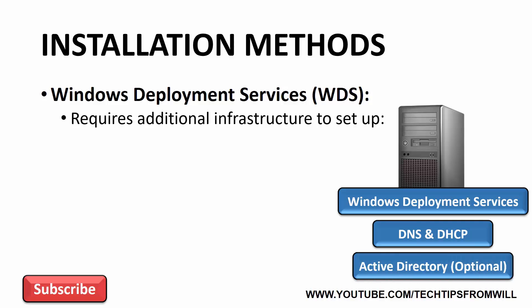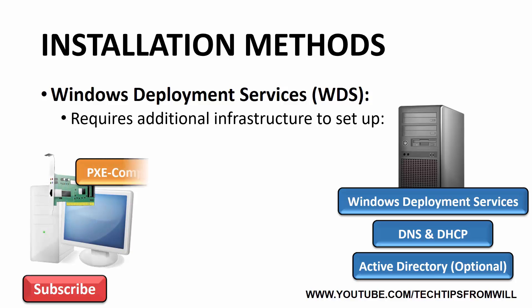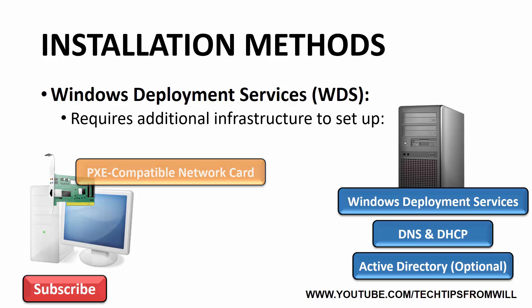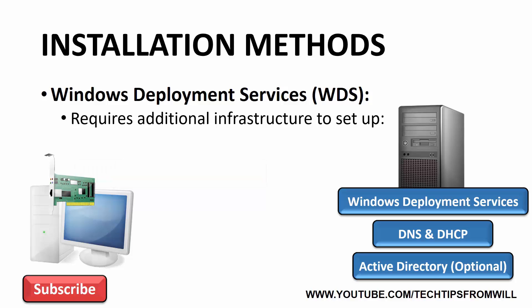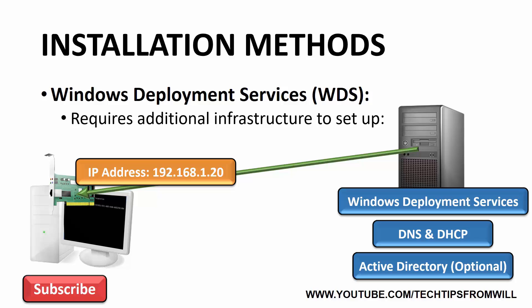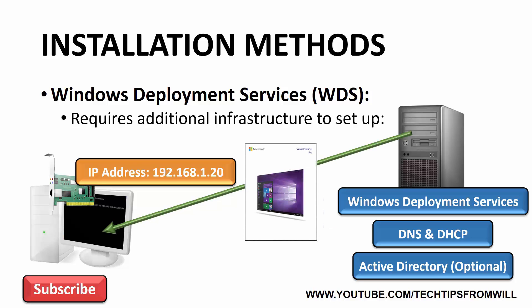Another service is Active Directory. Windows Deployment Services is scalable enough to work in both Active Directory and non-Active Directory environments. On top of that, the client computers must have a network card that supports PXE Boot. PXE, or pre-boot execution environment, is a technology that allows a computer to boot from the network. Windows Deployment Services essentially works like this: a client computer with no operating system is powered on, performs a PXE Boot from its network card, and receives an IP address from the DHCP server. Once connected to the network, the client computer boots into a Windows PE environment and downloads the Windows 10 operating system from the WDS server.